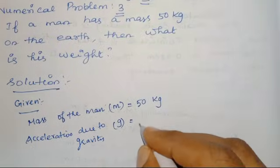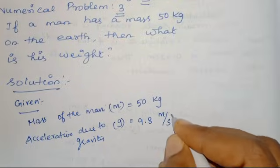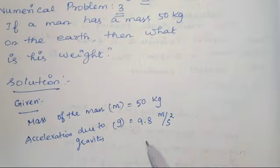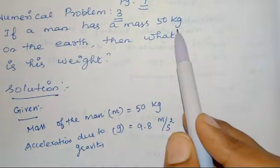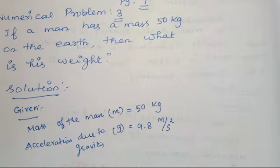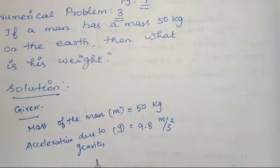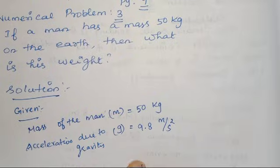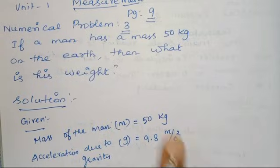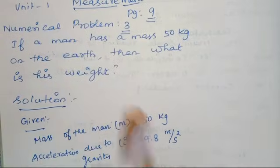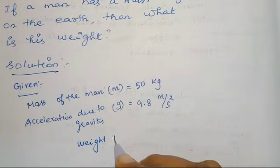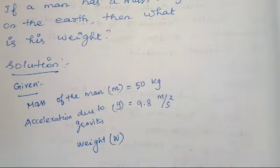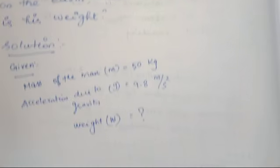Acceleration due to gravity, g, is equal to 9.8 meter per second square, which is a constant value. If a man has a mass of 50 kg on the earth, then I can write here acceleration due to gravity. The gravity value, g, is equal to 9.8 meter per second square. Then we have to calculate what is his weight. Weight will be the question mark. Weight of a man will be the question mark. Weight we can denote by the letter W.